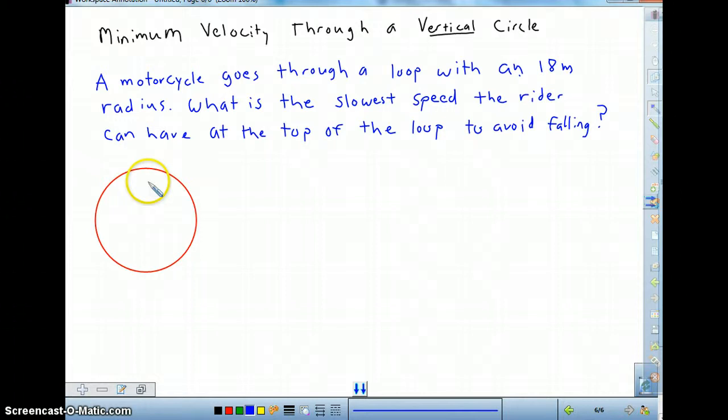In class we recently did a demonstration of me whirling a bucket of water around and we talked about that there had to be a minimum velocity that I had to maintain otherwise that water would come crashing down on me and get me soaking wet. So this is very similar to that demonstration. A motorcycle is going through a loop with an 18 meter radius, a vertical loop. We want to find the slowest speed the rider could get through that loop and not fall.